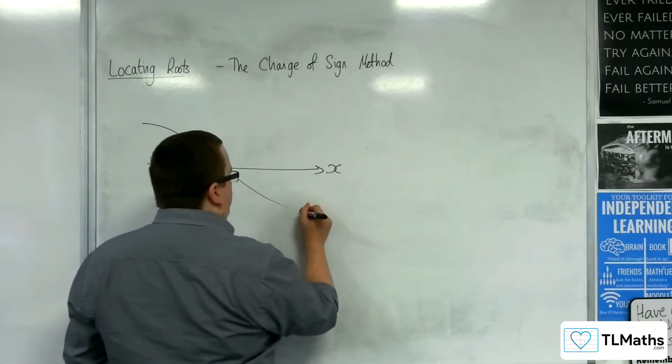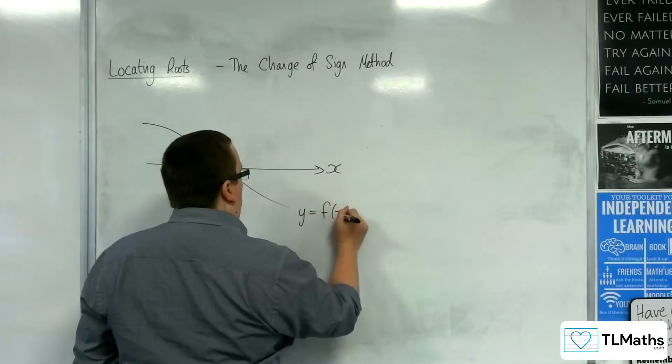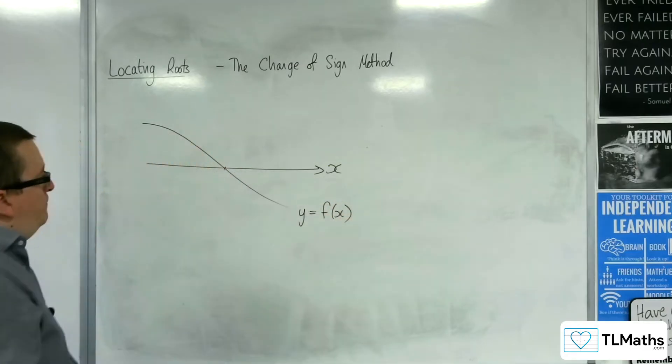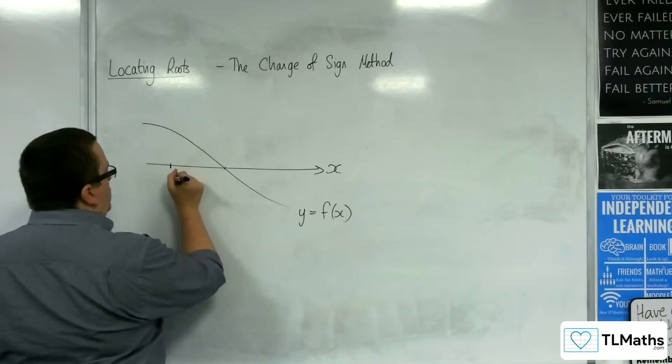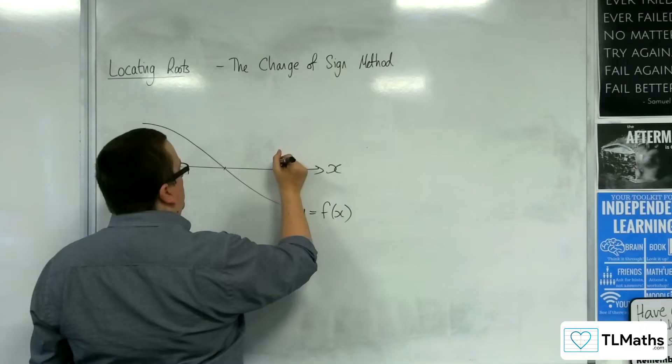Now this curve, let's give it a name, let's call it y equals f(x). And let's say we have this point which we'll call a and this point we'll call b.